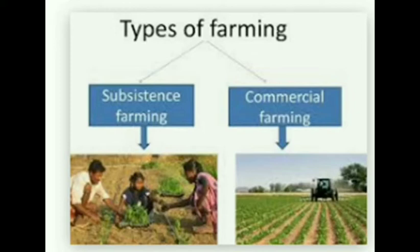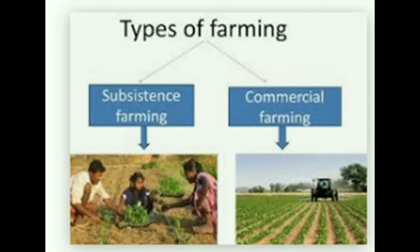Availability of labor is another factor — the number of people available to work. Whether a crop requires manual labor or whether technology, techniques, and modern equipment can be easily used. So these are some factors that decide what type of farming should be done.